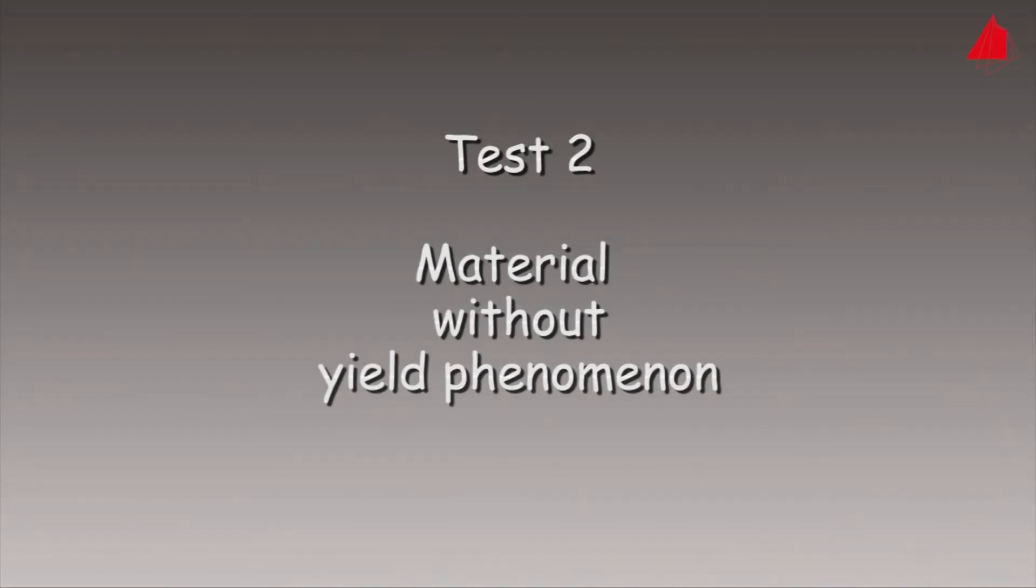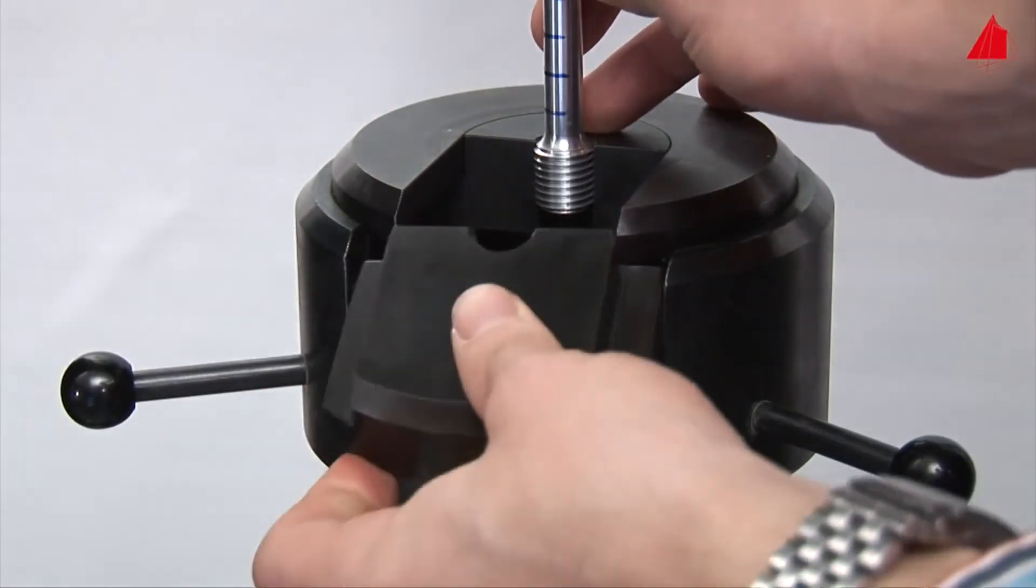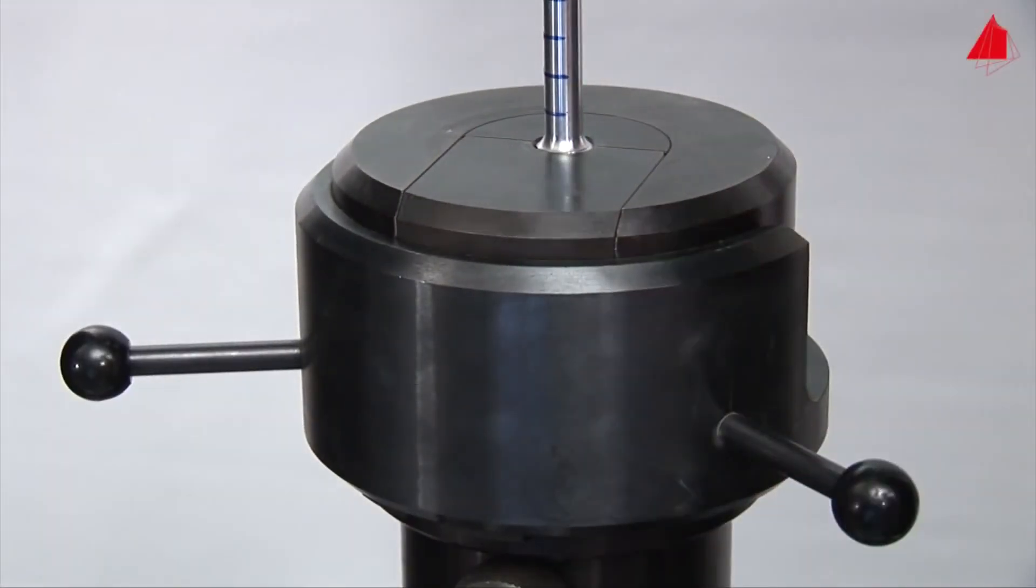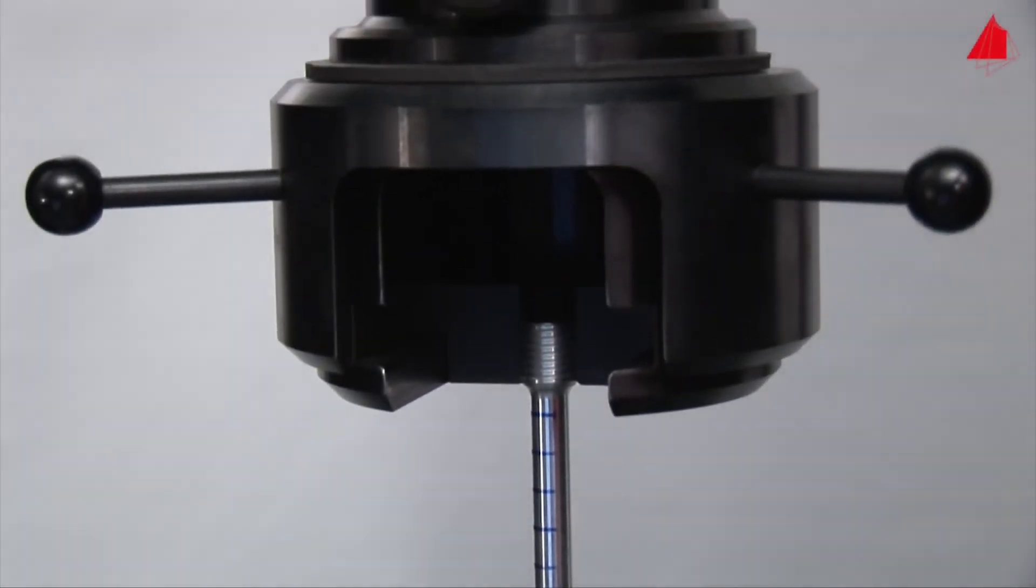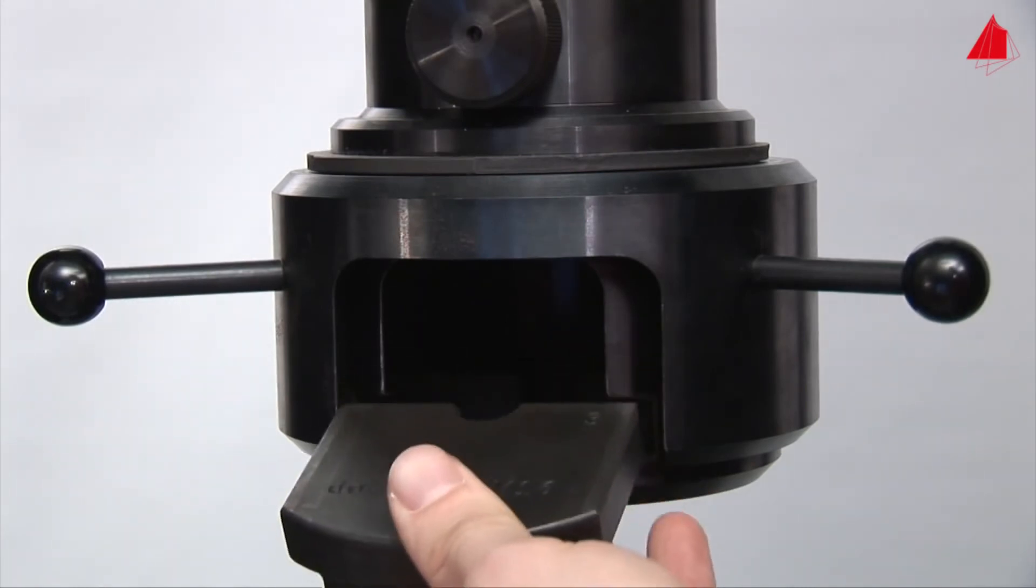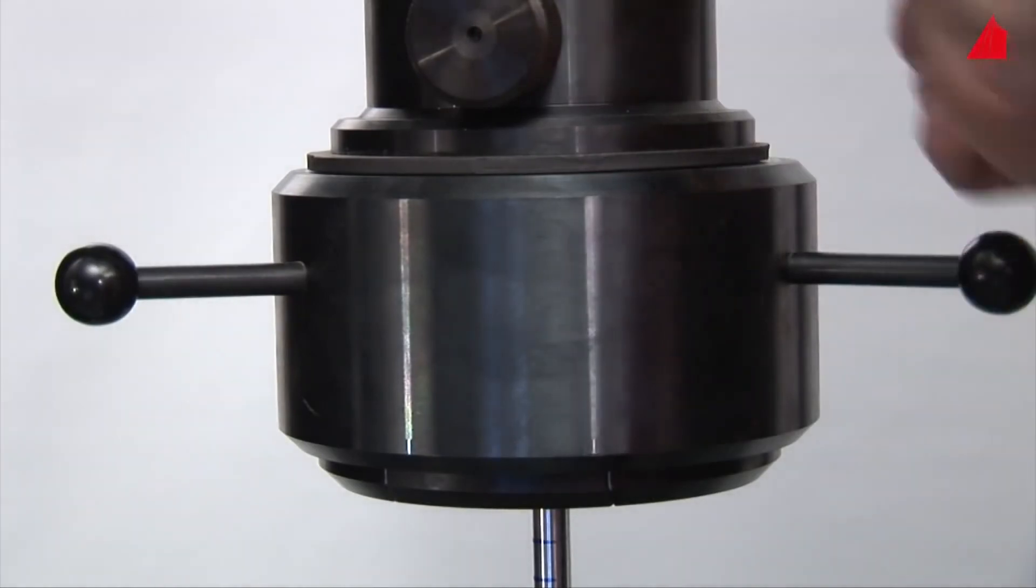In the second tensile test, a material without yield point phenomenon is to be tested. In this case, it is a precipitation-strengthened aluminum alloy. The test piece has exactly the same shape and dimensions as the specimen in the first test. It is cylindrical with an original diameter of 10 millimeters and an original gauge length of 100 millimeters.